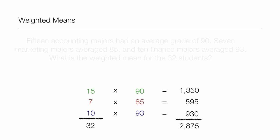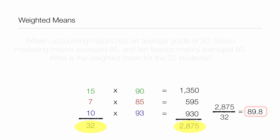Now if we take 2,875 and combine it with the 32, we can calculate the weighted mean. We take 2,875 divided by 32, and that equals 89.8. That's the weighted mean.